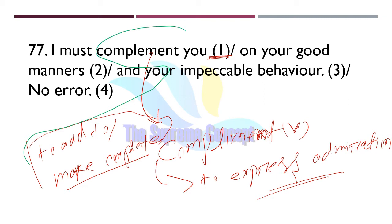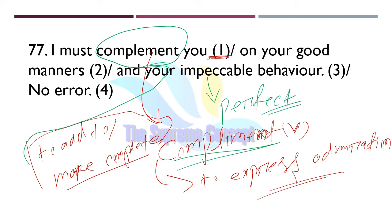So in this case we use 'compliment' — C-O-M-P-L-I-M-E-N-T — because we are admiring someone's impeccable behavior. 'Impeccable' means perfect behavior, without any faults or flaws.